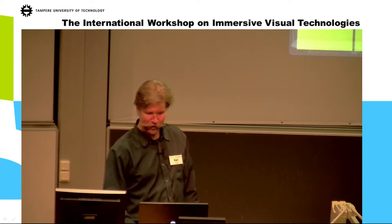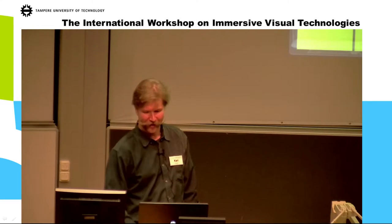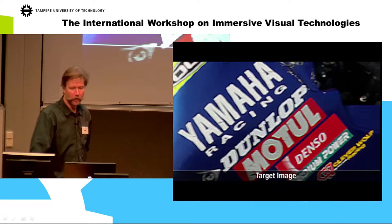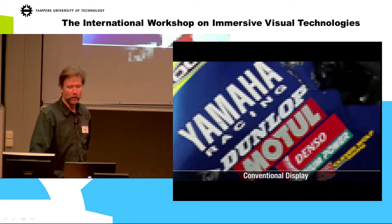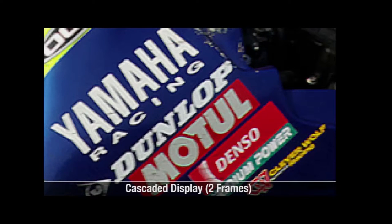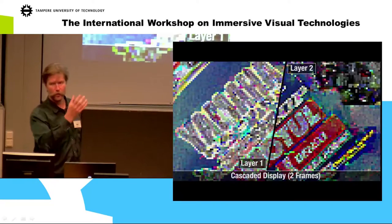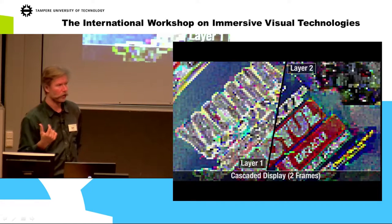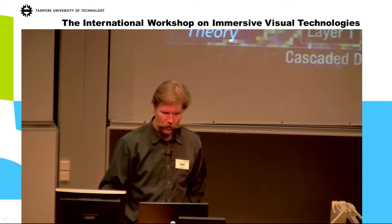But if you use a little bit of cleverness, you can address that. Here is a target image, and if we zoom in we can see what you would see on a conventional display, but then with this cascaded display using two panels, you can approximate the high resolution quite well — especially with video, but also with still images. The images displayed on each layer don't necessarily look very good individually, but when you put them on top of each other, the colors modulate each other and it looks much better.